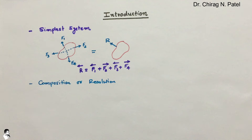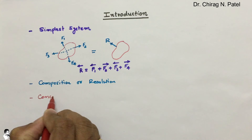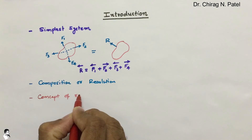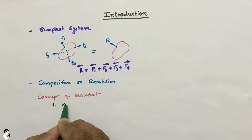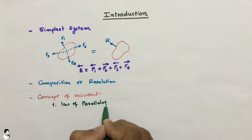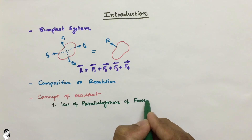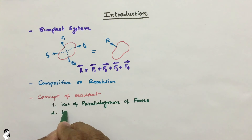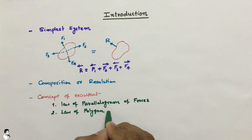This series of lectures includes understanding the concept of resultant and finding its value with the help of various methods. Those methods, which we will see in the next lecture, are: number one, the law of parallelogram of forces; and number two, the law of polygon of forces.